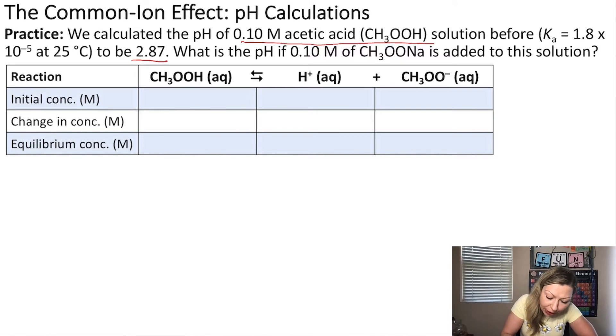an additional 0.10 mol per liter of sodium acetate. So we expect the pH to become less acidic because my H+ ion concentration decreases, so the pH should be somewhere above 2.87. Now, as usual, we do our favorite RICE tables. I already have the reaction in here, so I have the acetic acid forming H+ ions and acetate ions. Let's start filling out this table.